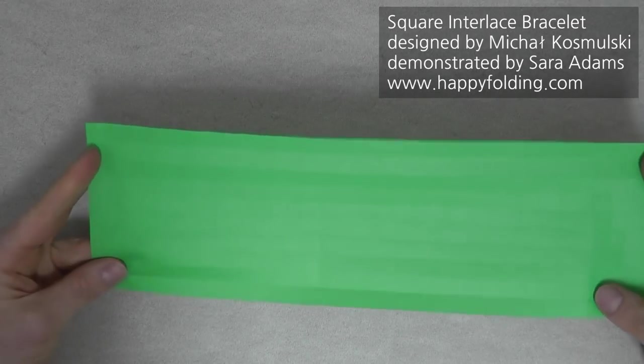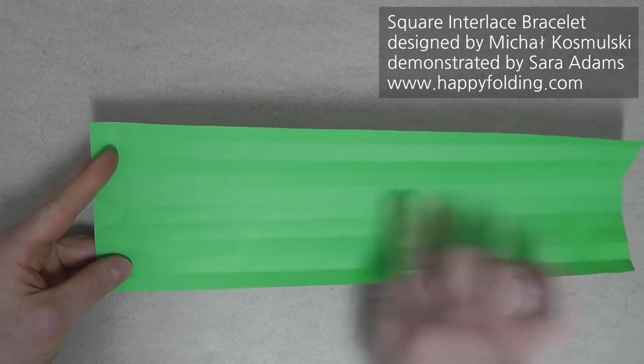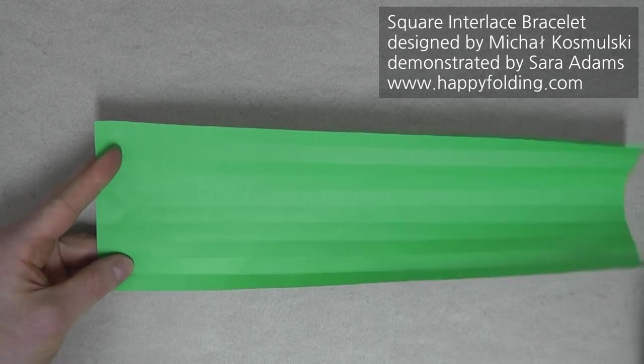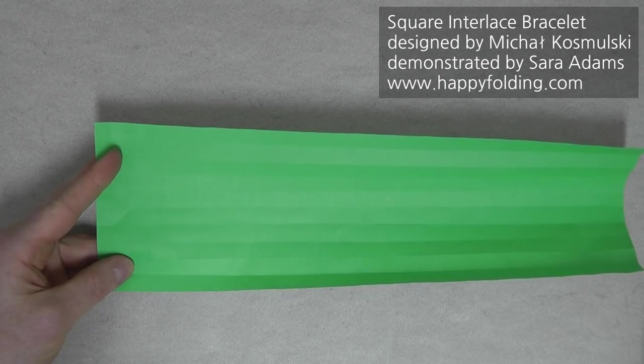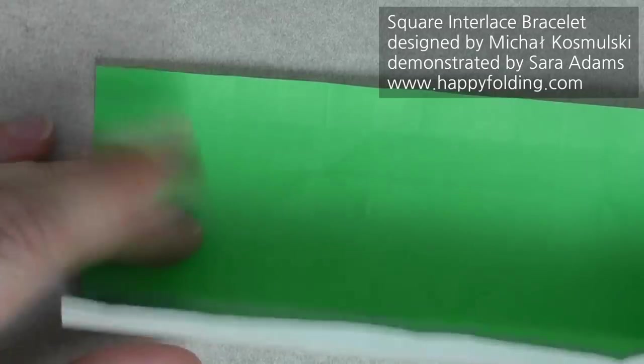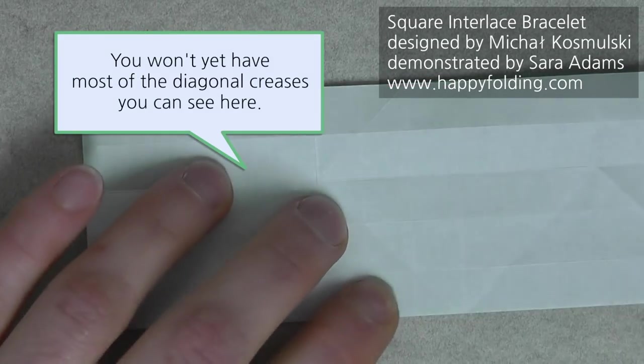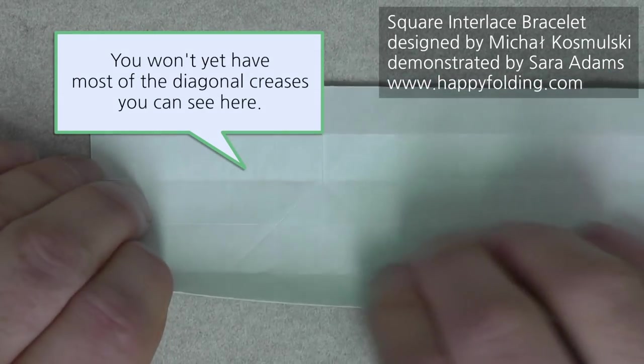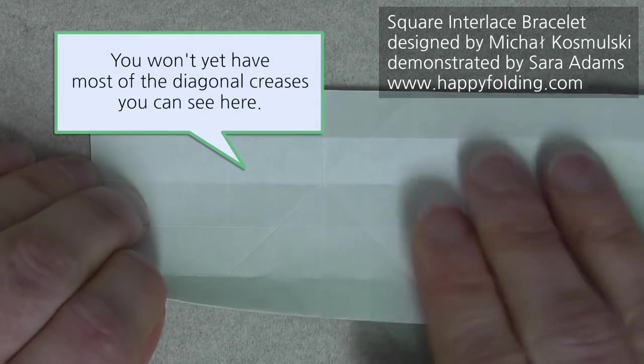Now, once you have your grid done with 32 by 10 divisions, or if you have one long strip, 64 by 10 divisions, we're going to fold the crease pattern. For this, we're first going to fold in half, and then we have the closed edge on the bottom.